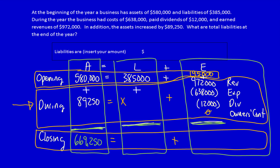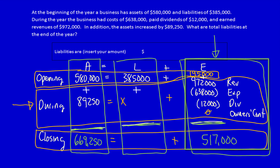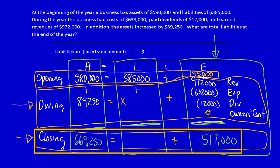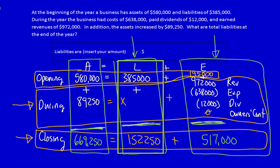Now I'm going to solve for the closing equity column: $195,000 plus $972,000 minus $638,000 minus $12,000 is equal to $517,000. I can now use the last row to solve for unknown liabilities: $669,250 minus $517,000 is equal to $152,250.